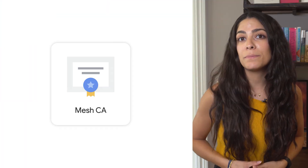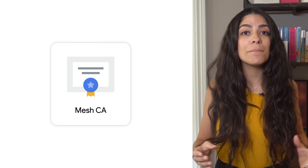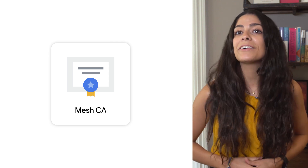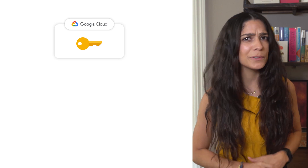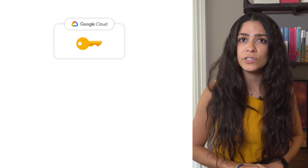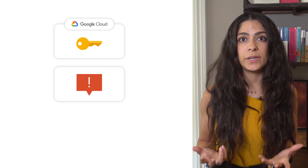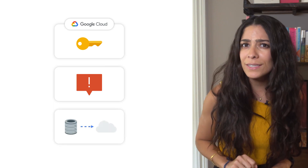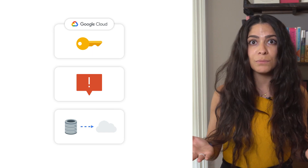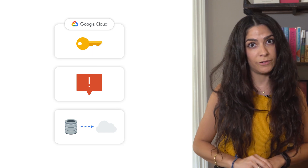Anthos Service Mesh includes a Google-managed multi-regional private certificate authority, Mesh CA, for issuing certificates for MTLS. But what do you do if you need to back your CA signing keys in a Google-managed HSM, are in a highly-regulated industry and are subject to compliance, or need flexibility with your on-prem route to move between clouds without being tied to a specific provider?